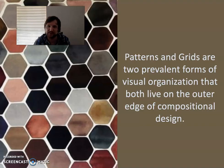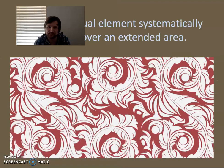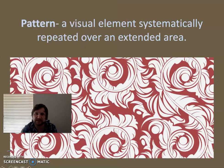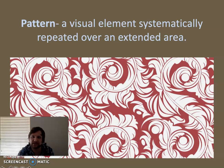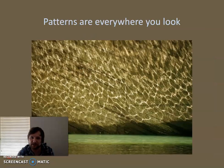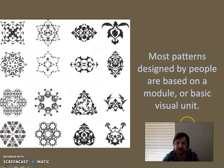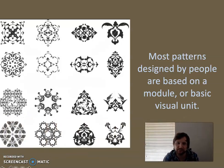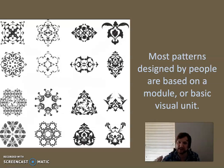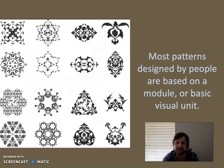Patterns and grids are really common things that you see everywhere. They both organize things visually and they both live on the outer edge of compositional design. A pattern is a visual element systematically repeated over an extended area, and they're everywhere you look. When you make a pattern in graphic art, you usually take a module and repeat it over however large an area you need. You can organize it in diagonals, verticals, or horizontals — basically you just have this repeating module.